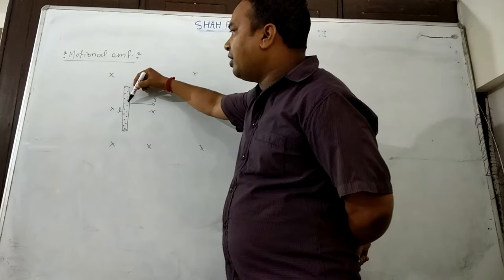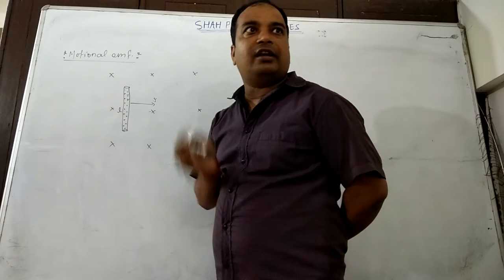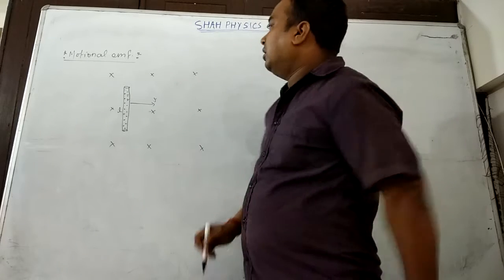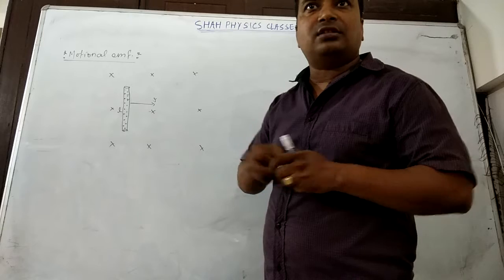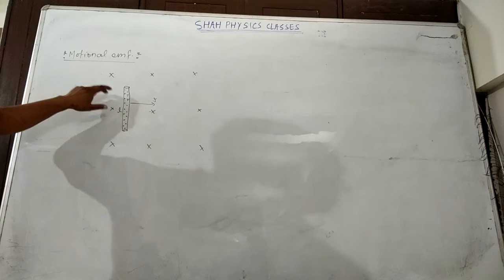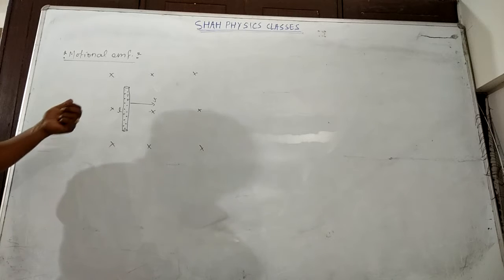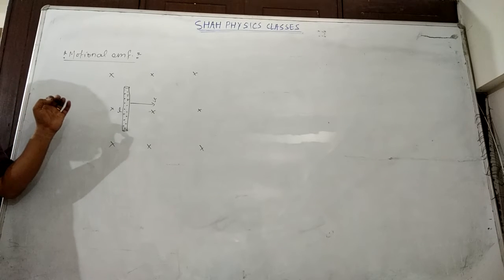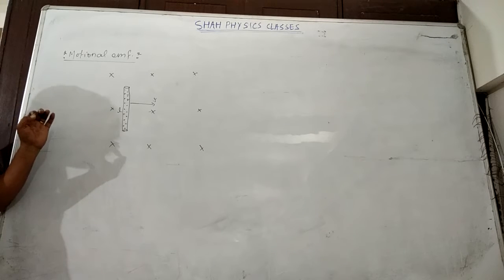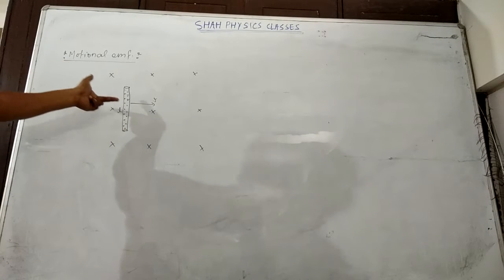So as the rod moves, these electrons will also move. Now as the electrons move — electrons are negative charge — their motion is in this direction and the magnetic field is going inward. So a force will be applied on these electrons because we have studied that when a charged particle moves inside a magnetic field, a magnetic Lorentz force acts on it.